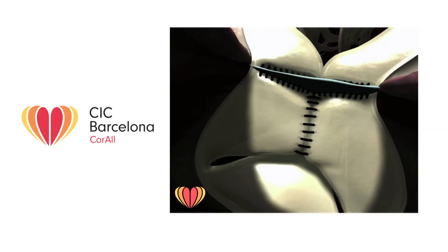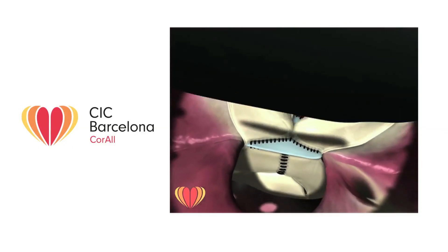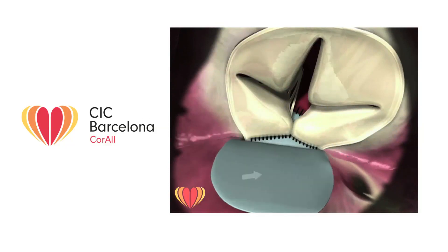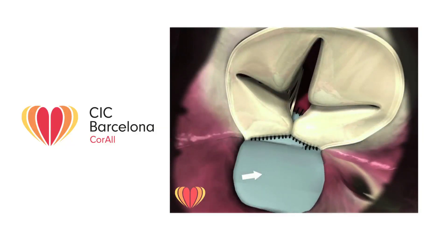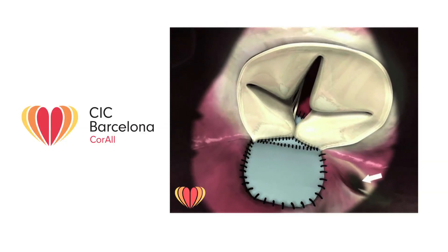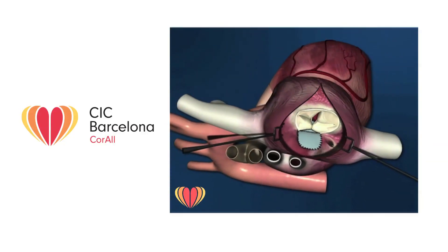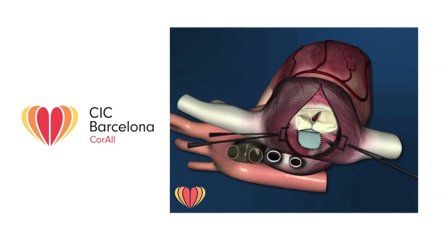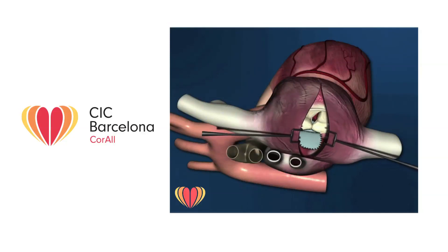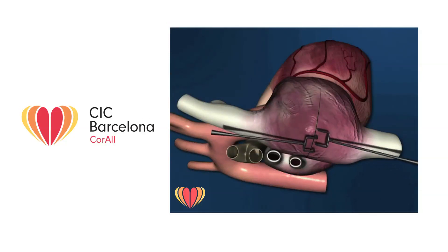For the atrial septal defect closure, a second patch is sutured partly on the first patch and partly on the free part of the rim of the defect, so that the coronary sinus opens into the right atrium. Finally, a continuous suture closes the right atriotomy.